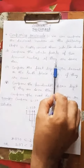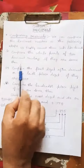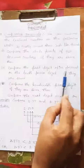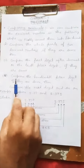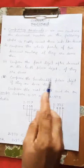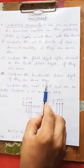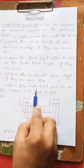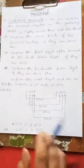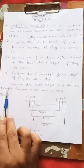If the whole parts are the same, then we will compare the first digit after the decimal, or the tenth place digit. Again, if they are the same, we compare the hundredth place digit. Further, if they are the same, then we compare the next digit, and so on. Let us understand the comparison of decimal numbers by an example.